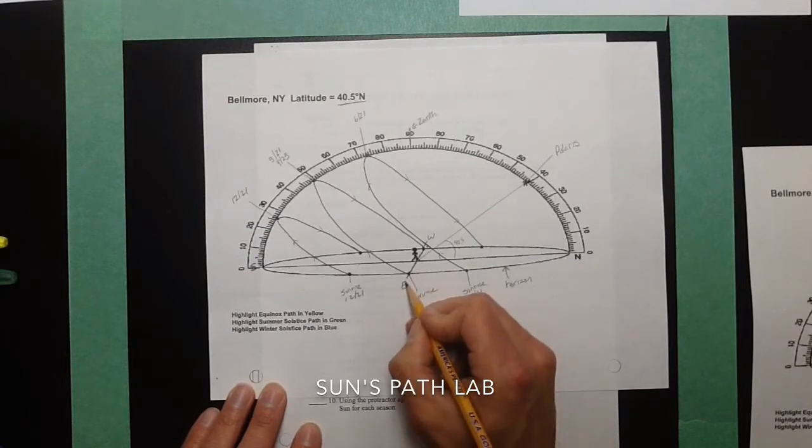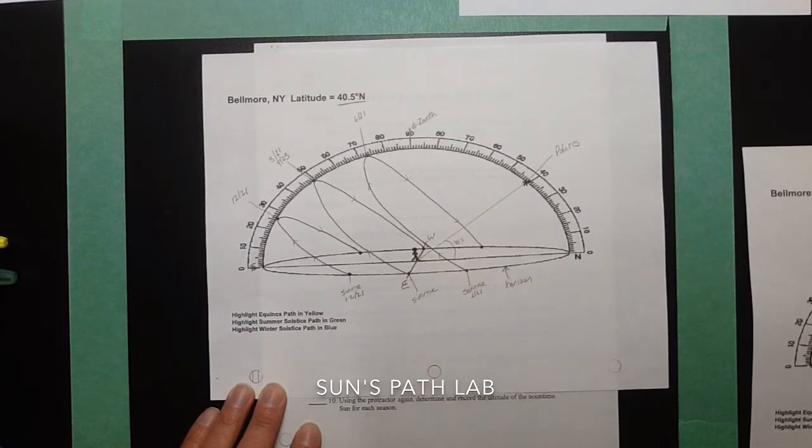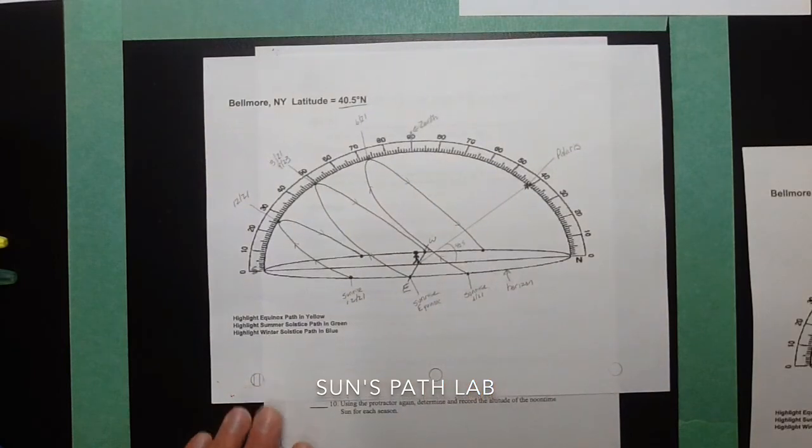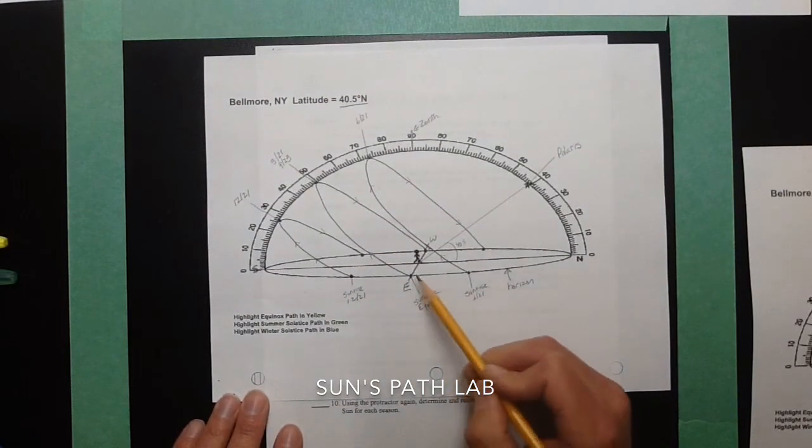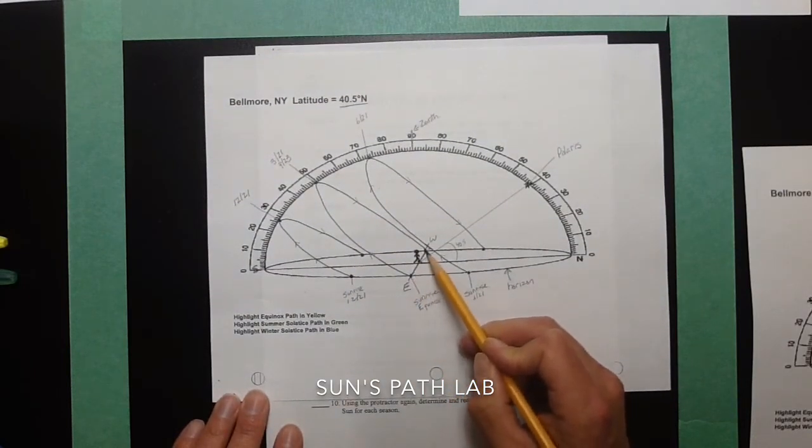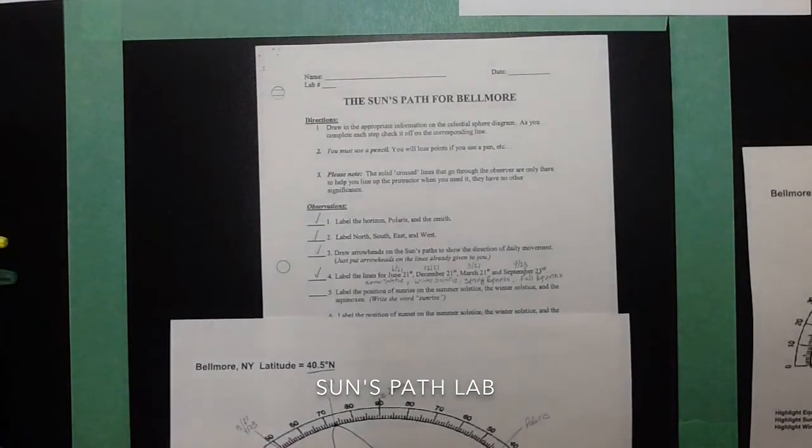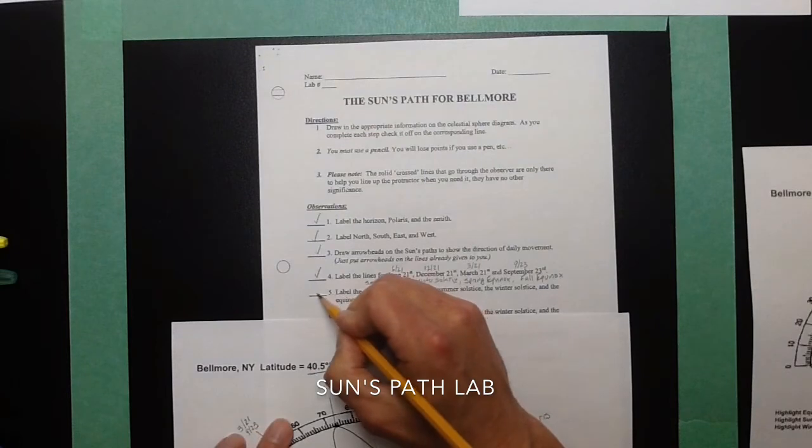The summer solstice is the farthest north of east. On the equinox, the sun is rising due east and setting due west. So that's usually the easiest path to find, because on the equinox path, you see that it's always going directly east to directly west. All right. So we've completed number five.